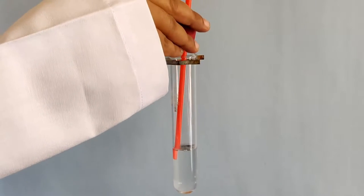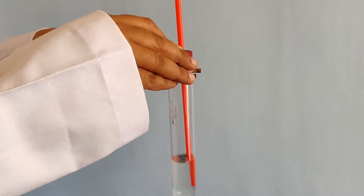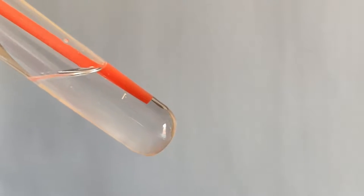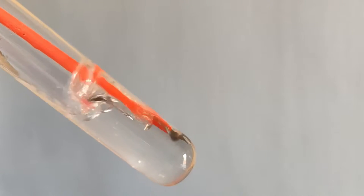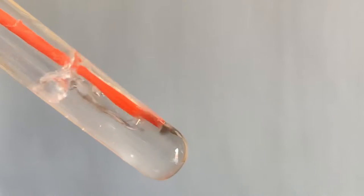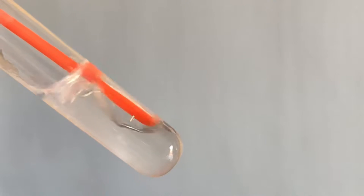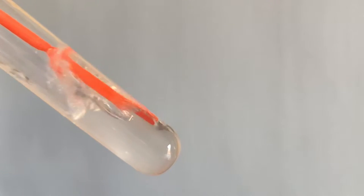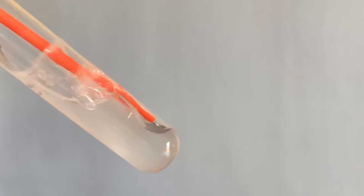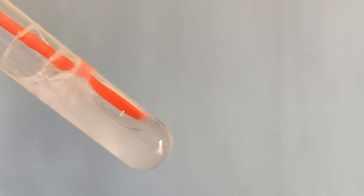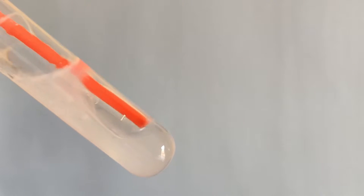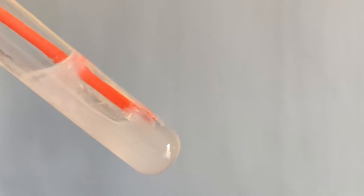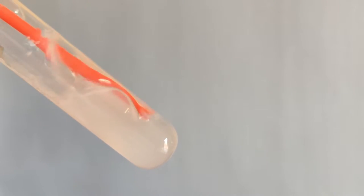Insert a straw into the liquid. Blow into the test tube through the straw for a few seconds. Do you notice any change in the color of the liquid in the test tube?